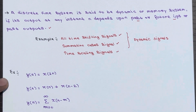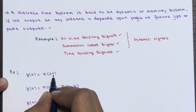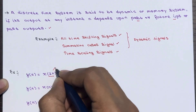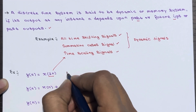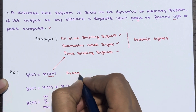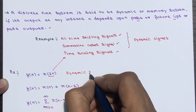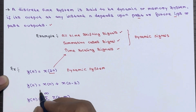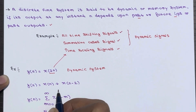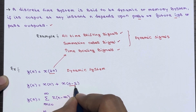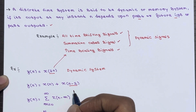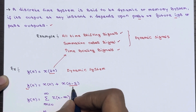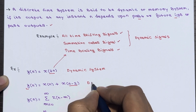For example, Y(n) = X(2n) — here time scaling is happening, so this is an example of a dynamic system. Another example: Y(n) = X(n) + X(n-2). Here X(n-2) means past input, so the output depends upon the past input, making it a dynamic system.